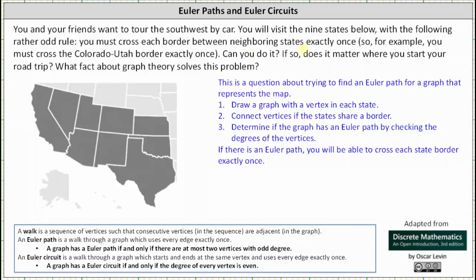To represent the map as a graph: number one, we draw a graph with a vertex in each state; number two, we connect vertices if the states share a border; number three, we determine if the graph has an Euler path by checking the degrees of the vertices. If there is an Euler path, you will be able to cross each border exactly once.